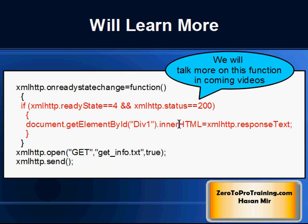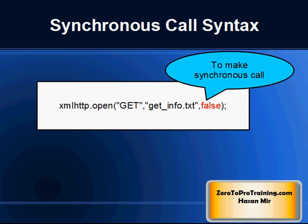At this point, you need to understand the high-level syntax. To make a synchronous call, simply pass the value false in the third parameter of the open method, as you can see on the screen.